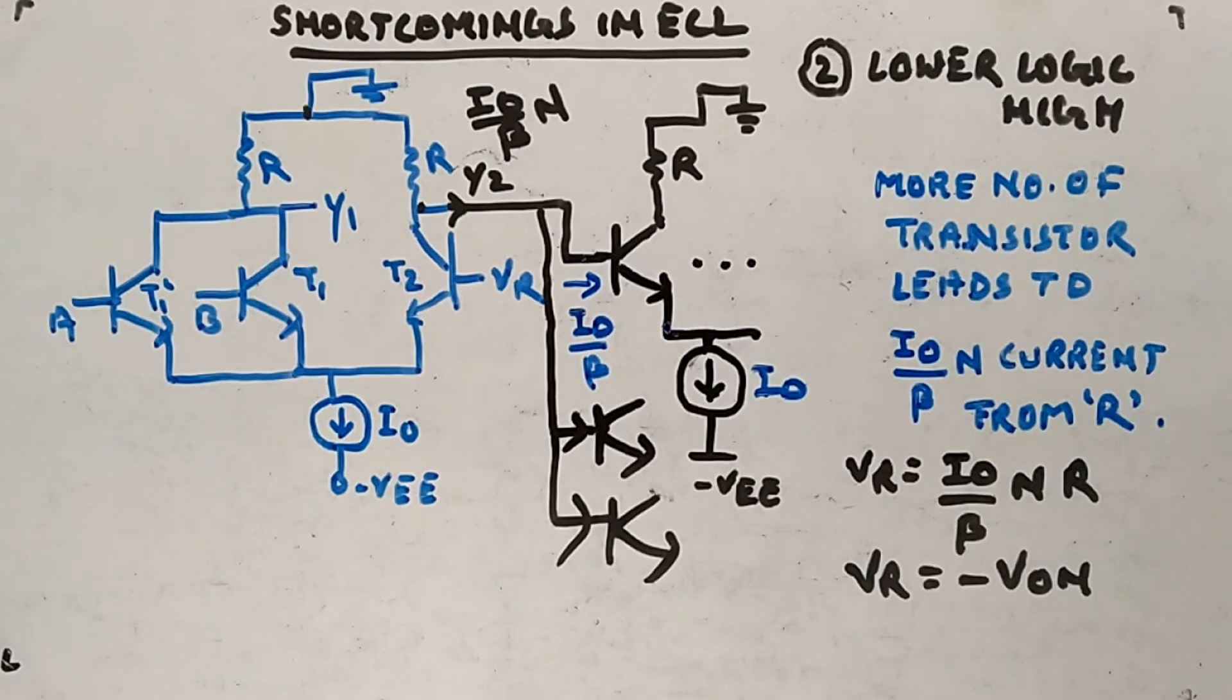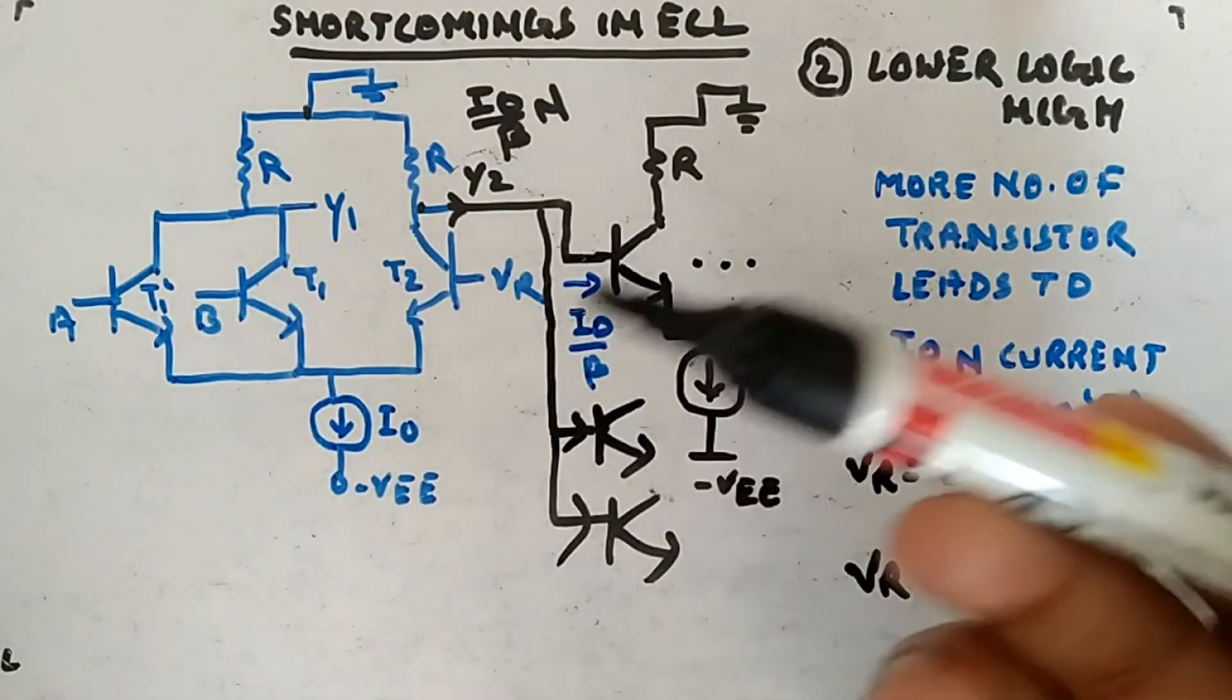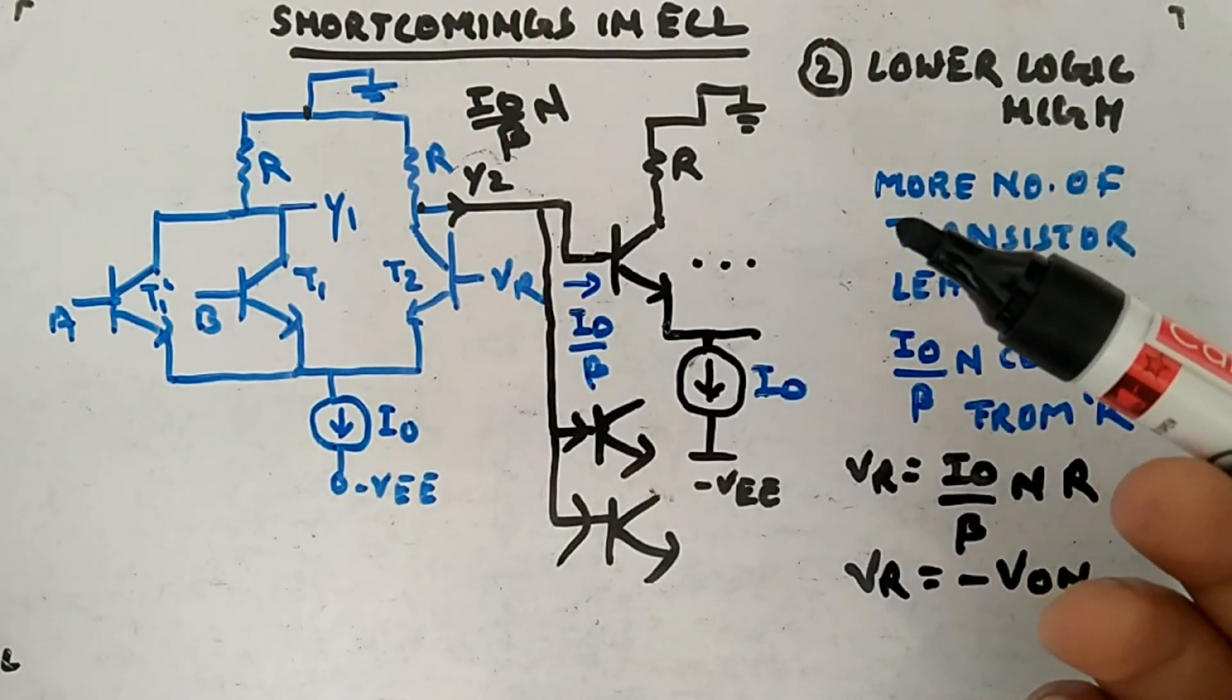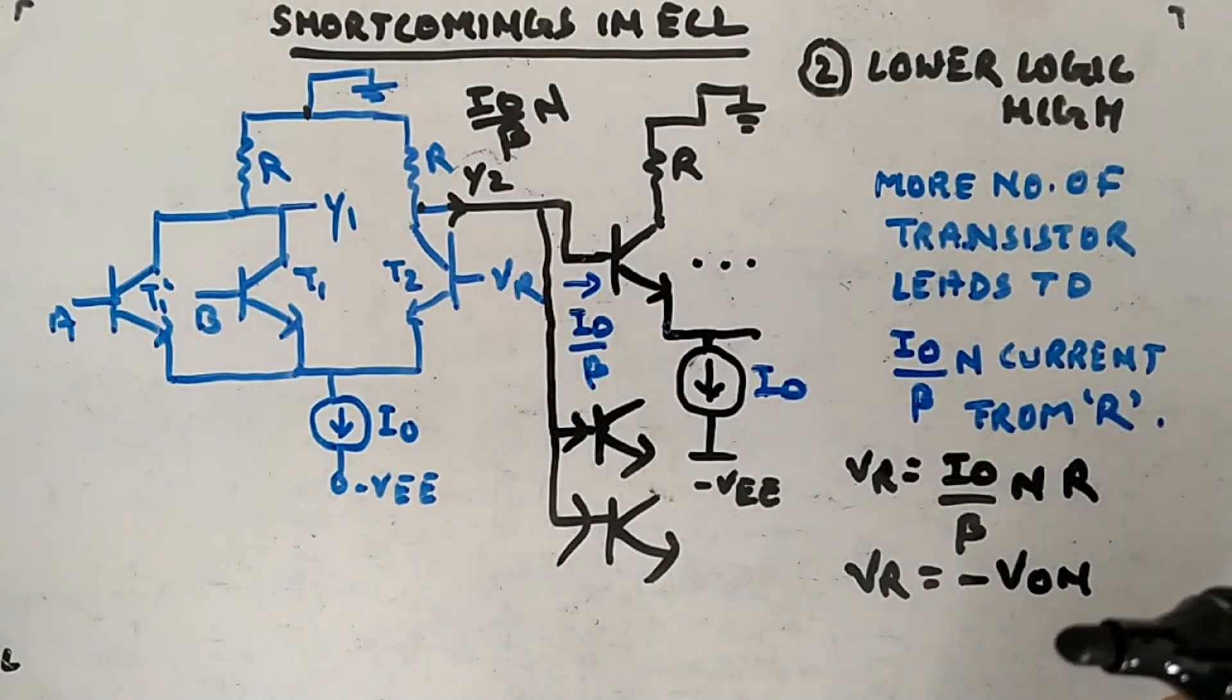That's why modified ECL came where we will be using common collector arrangement after the output, and then we will take the output so that these two problems will be solved. We will see how.